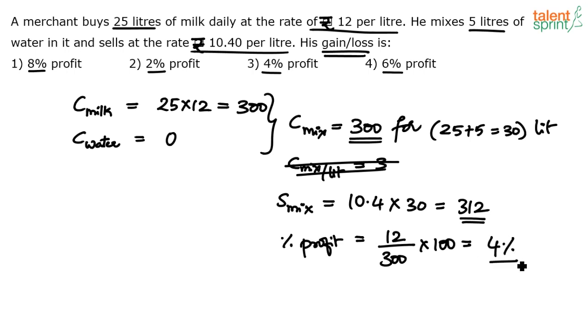Option three. Mental calculation—this step is not to be put on paper. ₹300 and ₹312, meaning 4% difference. So 4 is the answer—4% profit.